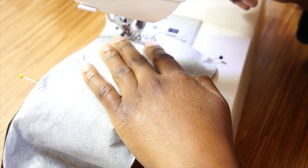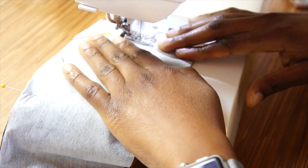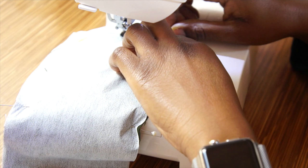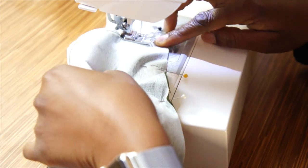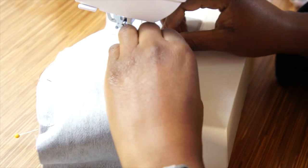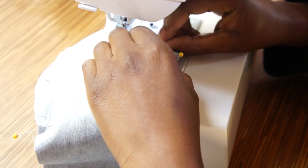Once you've eased everything in it's now time to head to the sewing machine and you'll sew from one dot to the next dot. Make sure that you do not sew the bottom of the collar.